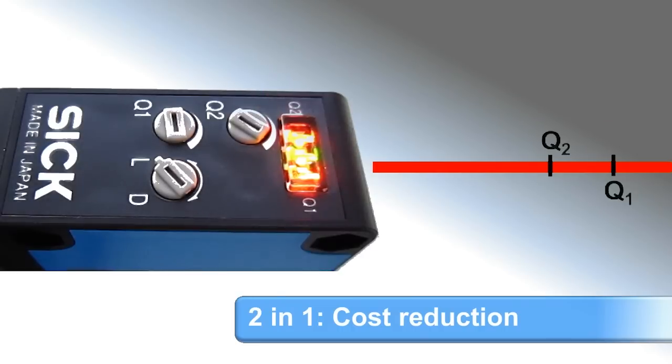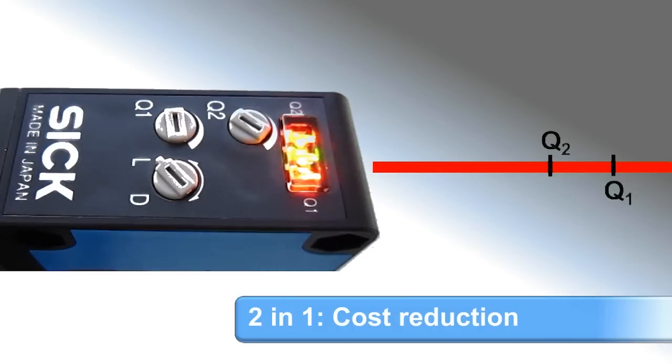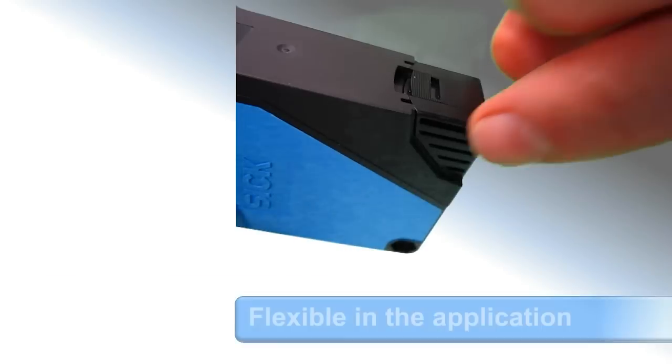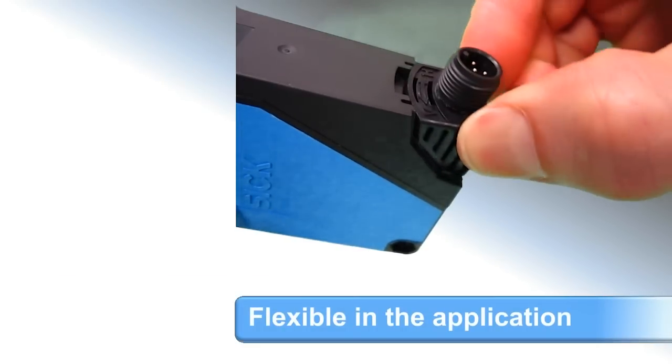We've effectively squeezed two sensors into a single W280 Long Range, reducing cost. It's flexible, thanks to an adjustable M12 connector and the light-dark selector.